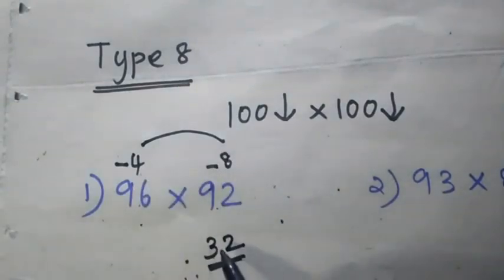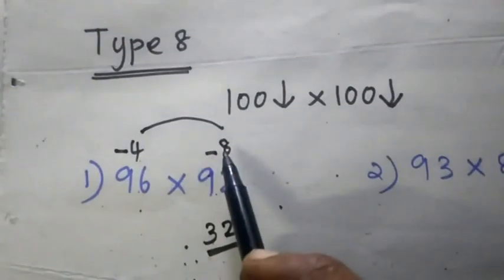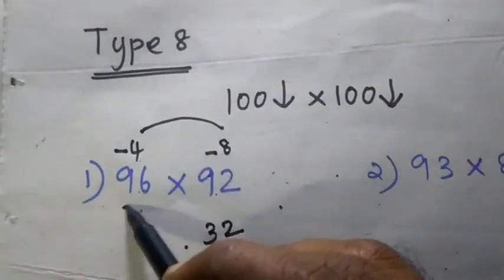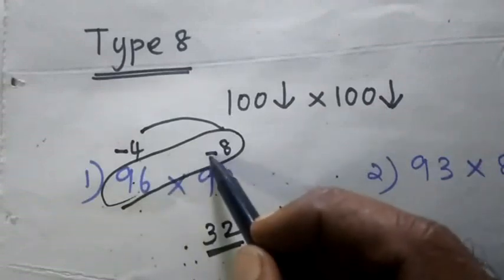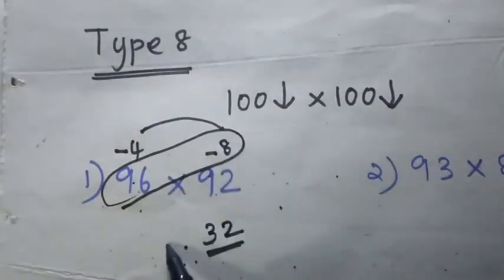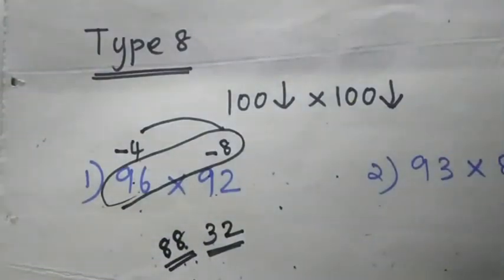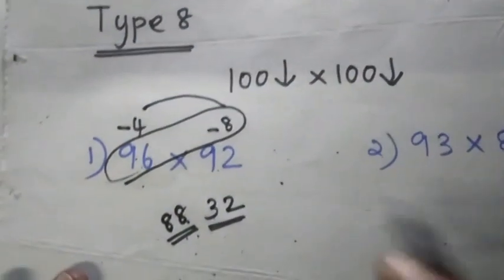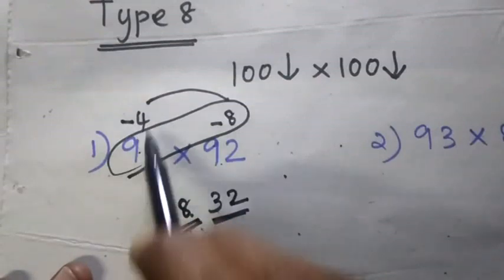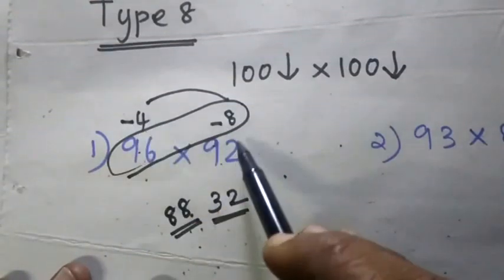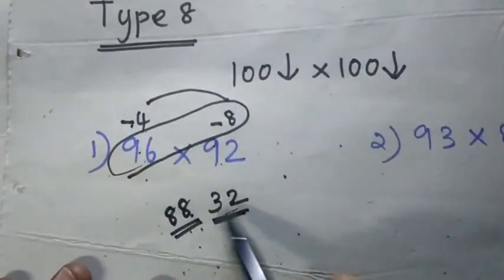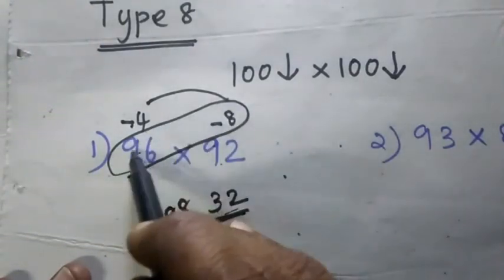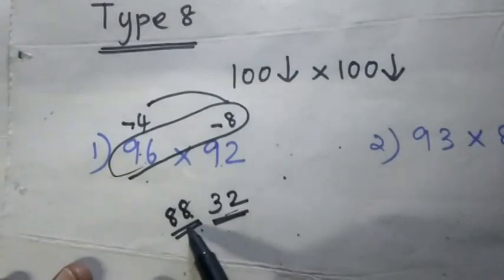4 and 8 is 32. Next chain is cross: 96 minus — 96 is minus. 88. I will tell you how to answer again. How to cross — 96 is 88.